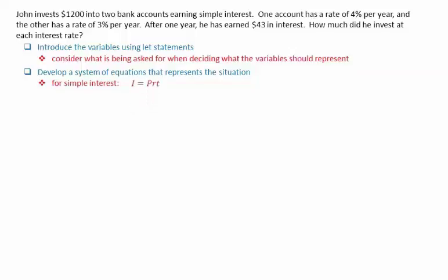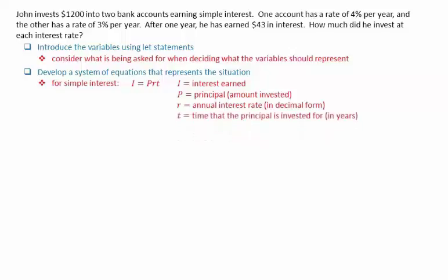we can use the formula I = PRT. The I corresponds to the interest earned, P for the principal, which is the amount invested, R is the annual interest rate, which must be expressed in decimal form, and T is the time that the principal is invested for, in years.